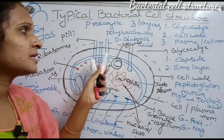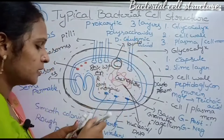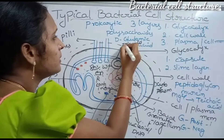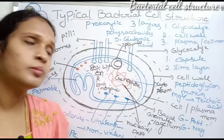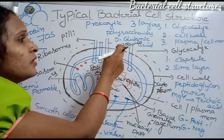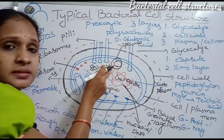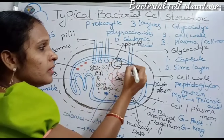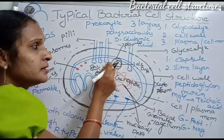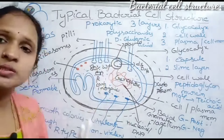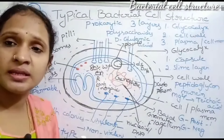Bacterial cells also have extra chromosomal genetic material called the plasmid. The plasmid appears as circular, round, double-stranded DNA. It is resistant to drugs and antibiotics, and it is individually self-replicating.